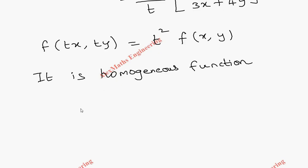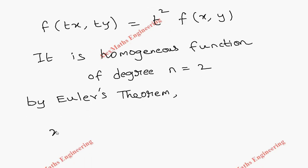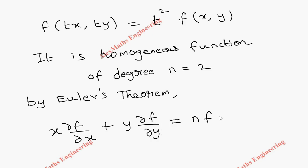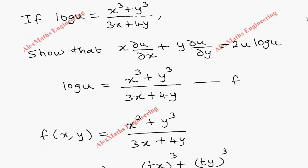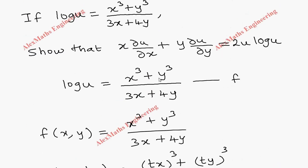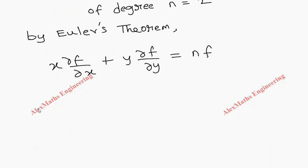This shows that it is a homogeneous function of degree n = 2. Now by Euler's theorem we have x · ∂f/∂x + y · ∂f/∂y = n·f. In place of f we can use log u, so we write x · ∂(log u)/∂x + y · ∂(log u)/∂y.